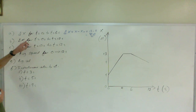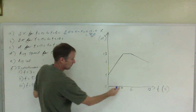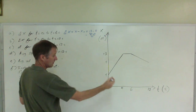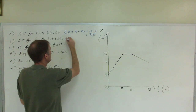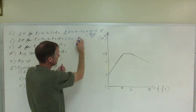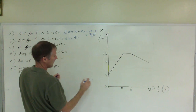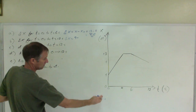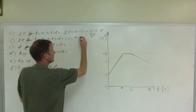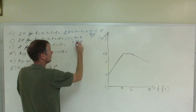For displacement from 0 to 12 seconds, pull the information off the graph again. At 12 seconds, the final position is 9 meters. The initial position is 5 meters. So 9 minus 5 equals 4 meters.